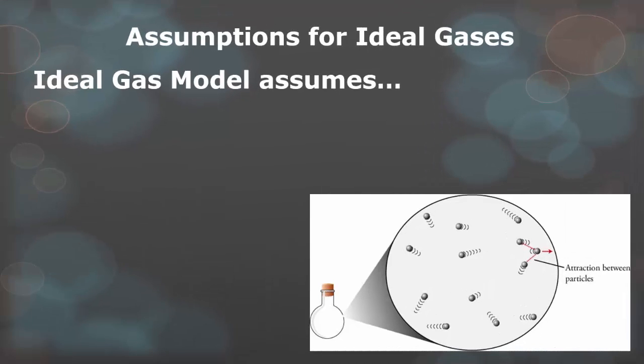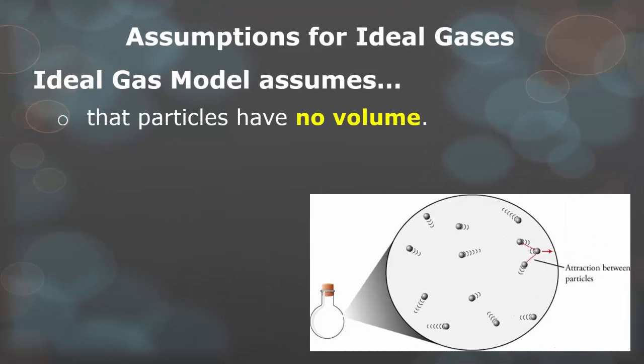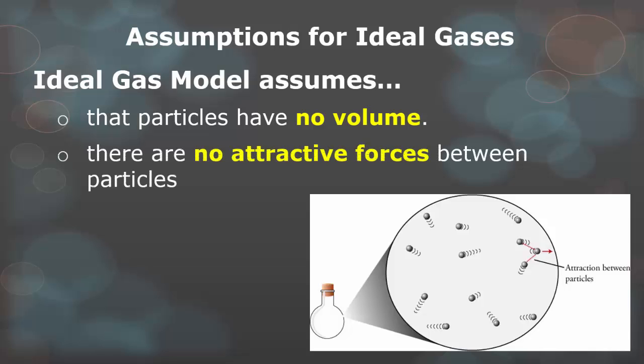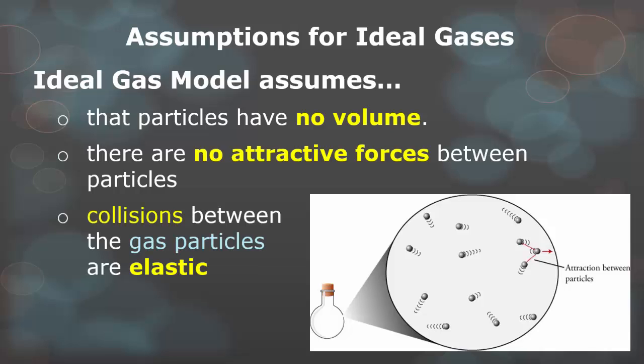The ideal gas model assumes that the particles of a gas have no volume. If you think about the size of one molecule, it's so tiny it's insignificant. There are also going to be no attractive forces between the particles, so nothing is clumping together. If it were clumping together, your gas sample would technically be partially liquid or solid. The ideal gas model also assumes that all collisions between gas particles are elastic, meaning there is a perfect transition of energy between the two particles.